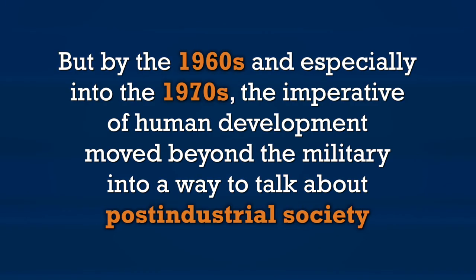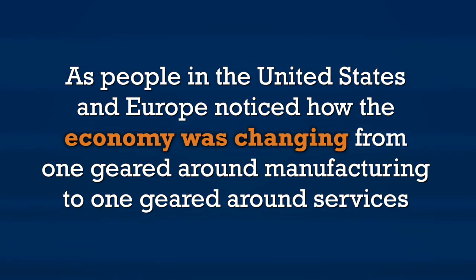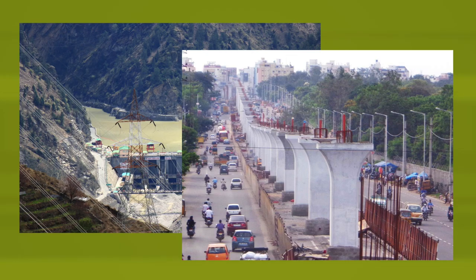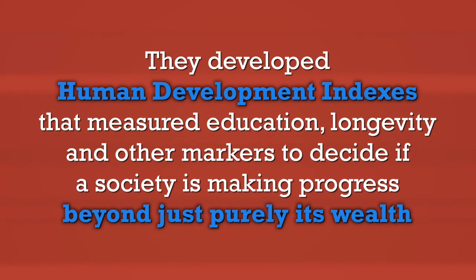By the 1960s and especially into the 1970s, the imperative of human development moved beyond the military into a way to talk about post-industrial society, as people in the United States and Europe noticed how the economy was shifting from manufacturing to services. Human development became a way to move beyond purely materialistic concepts of social progress like per capita income or GDP. The concept went global during the 70s and 80s as international organizations like the UN and the World Bank — which had begun worrying about infrastructure projects like dams, ports, roads, and electricity grids — became focused on pro-poor agendas and developed human development indices measuring education, longevity, and other markers of societal progress beyond just wealth.